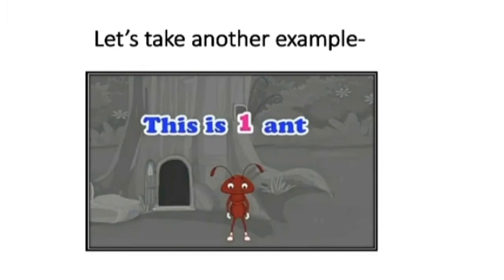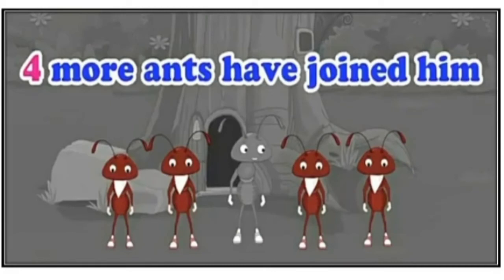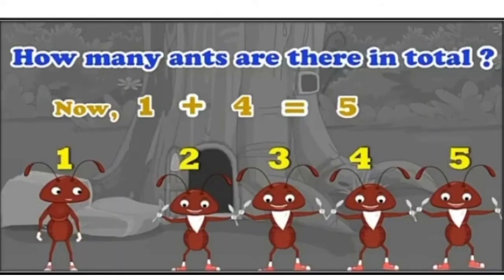Let us take another example. This is one ant. How many ants? One. Four more ants have joined him. Now, how many ants are there? In total, one plus four is equal to five. So, five ants are there in total.